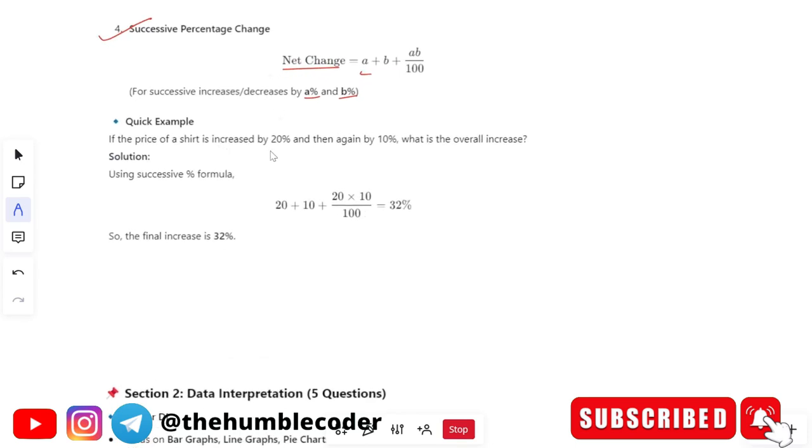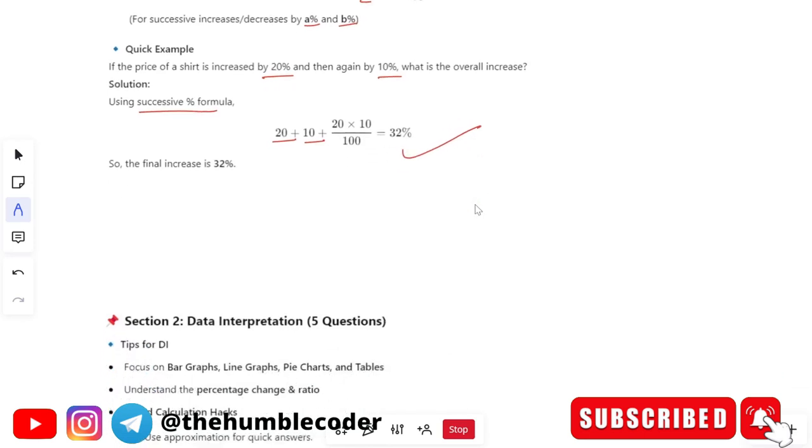See if the price of a shirt is increased by 20 percent and then again by 10 percent this is called a successive increment. Or successive increasing which means initially it was increased once and then again it was increasing. So how you will calculate it using successive percentage formula a plus b plus a into b divided by hundred which is going to give you 32 percent. Hope it is clear.